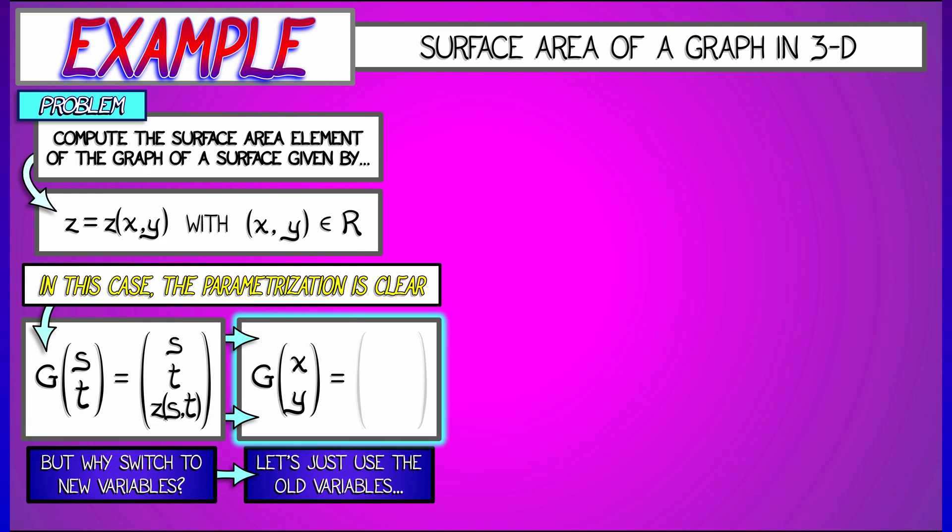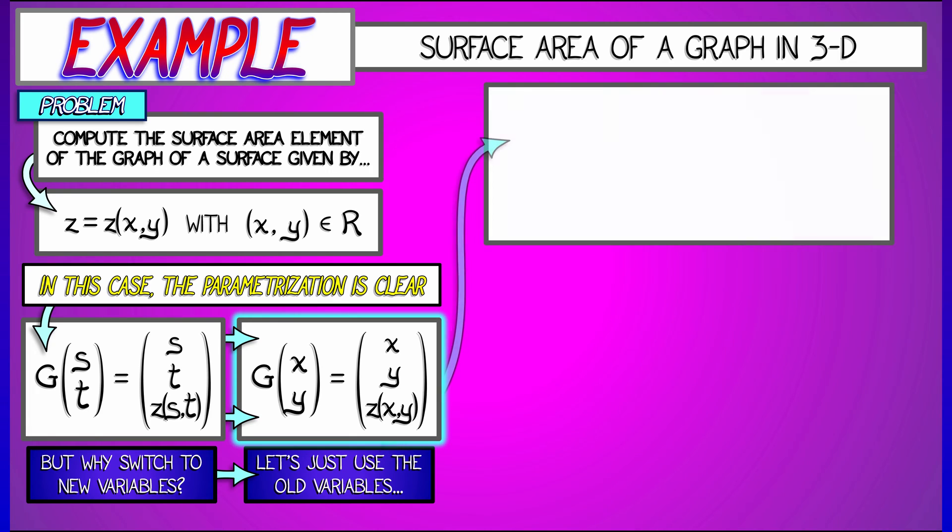Why not just use the old x and y variables that we had? So let's say that g is a function of x and y, and it takes x and y to x and then y and then z as a function of x and y. That's a simple parametrization.